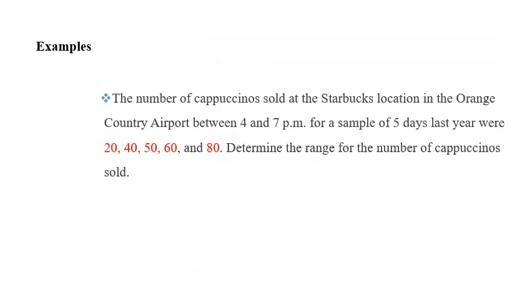Here there is an example. The number of cappuccinos sold at the Starbucks location in the Orange County airport between 4 and 7 pm, in this case, for a sample of five days last year were 20, 40, 50, 60, and 80. Determine the range for the number of cappuccinos. This is very easy: the largest is 80, the smallest is 20, so the range is the difference, which is 60.